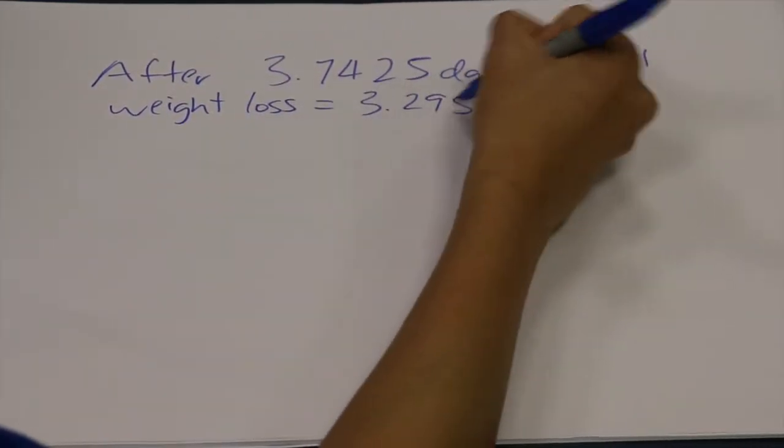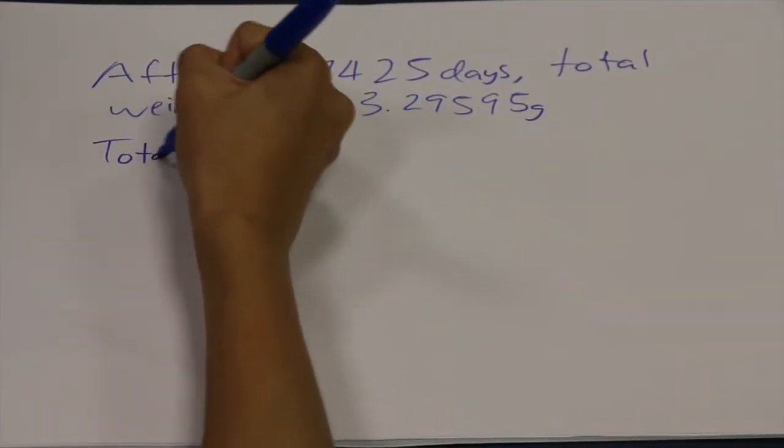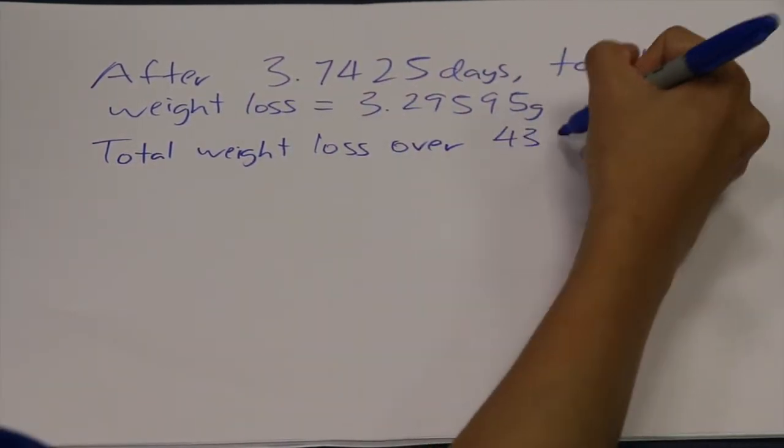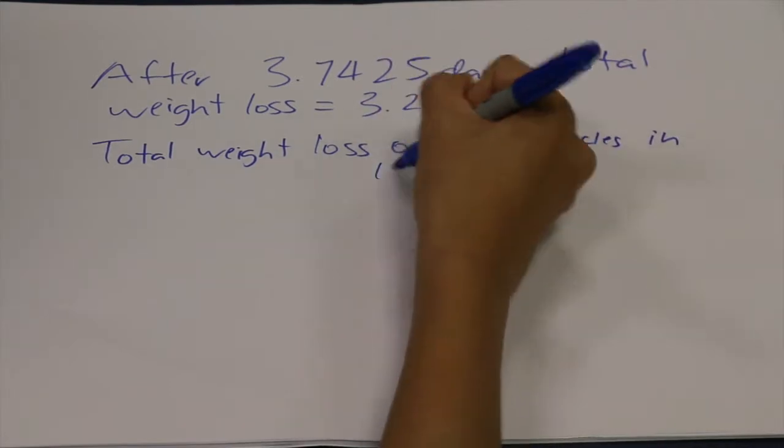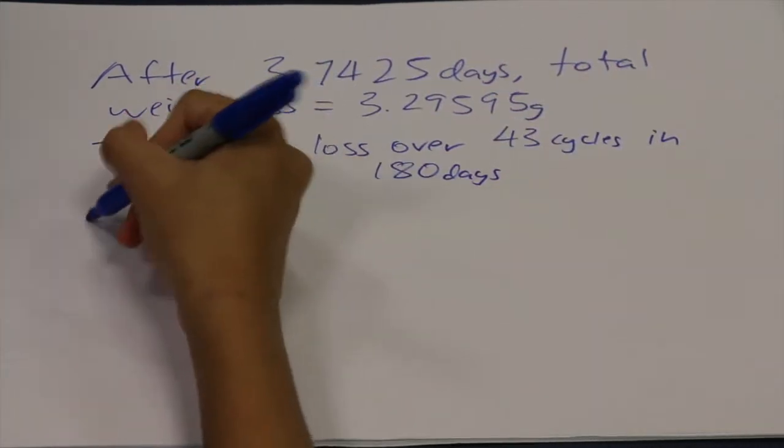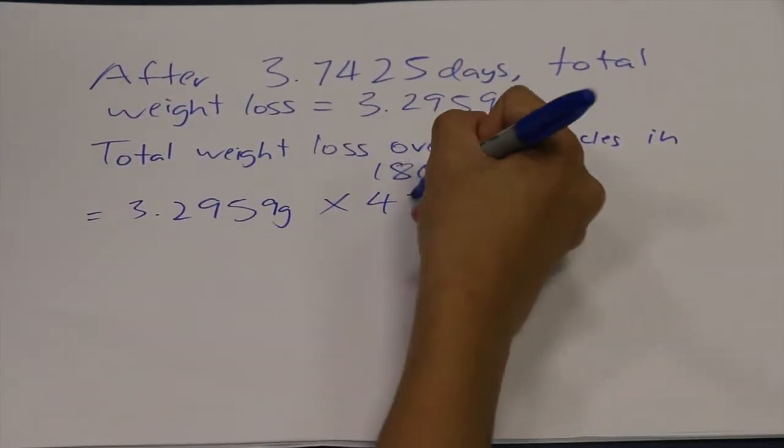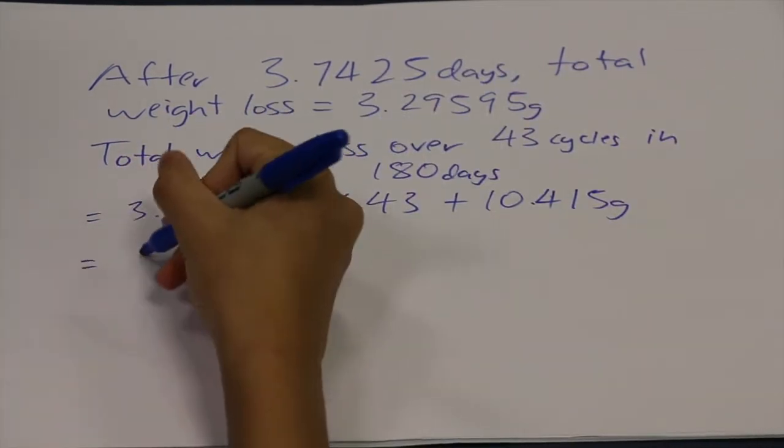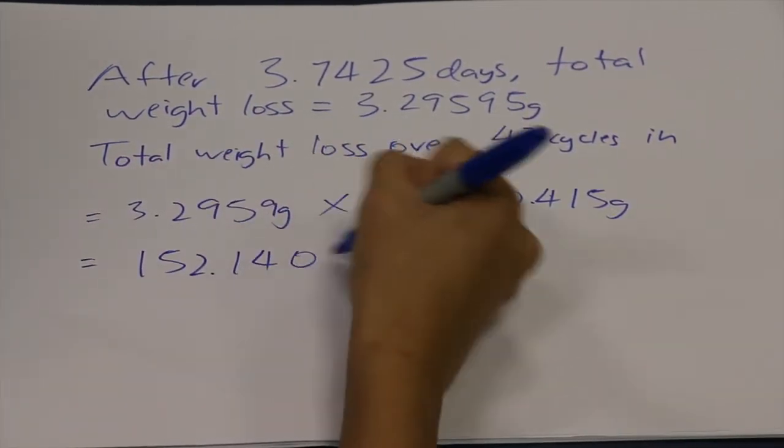Since there's a total of 43 cycles of spraying, the total weight loss over 180 days is equals to 3.29595 times 43 plus 10.415, which gives us 152.1408.